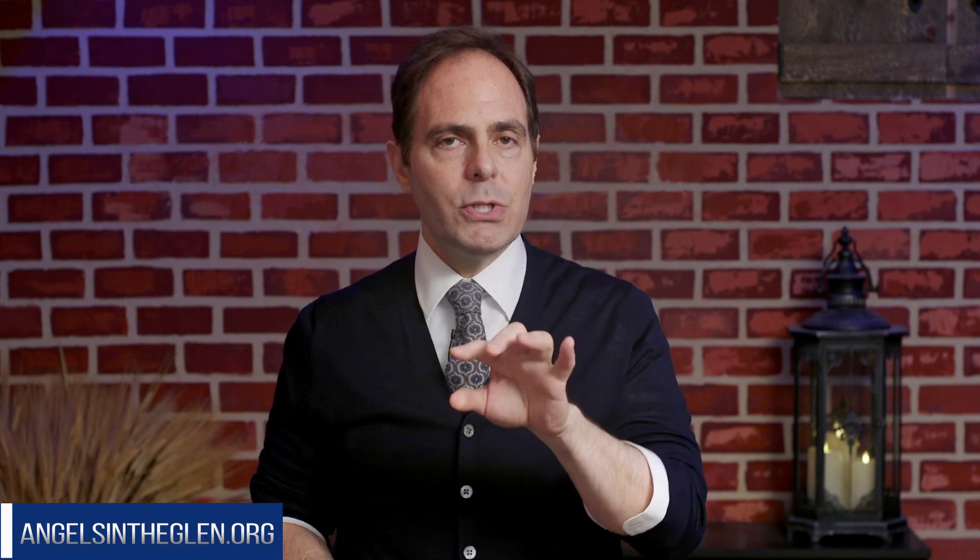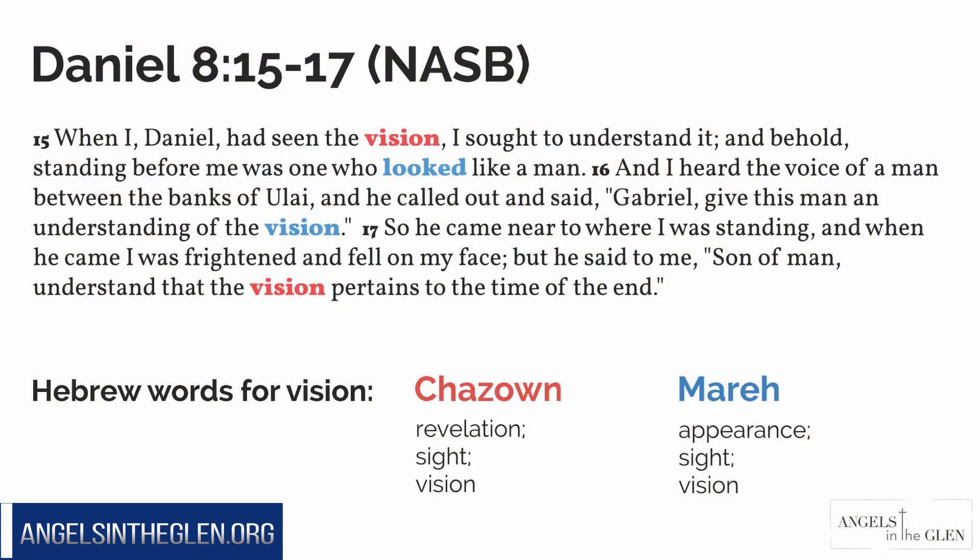Take a look at these three verses in Daniel chapter 8 to distinguish between the two visions. In the Hebrew, there are two words for vision. You see it on the screen: mare and hadzone. They both mean the same thing — revelation, sight, vision, appearance. They both mean vision, but there are two different words. When they translated it into English, though, they only used one word, and that's vision.